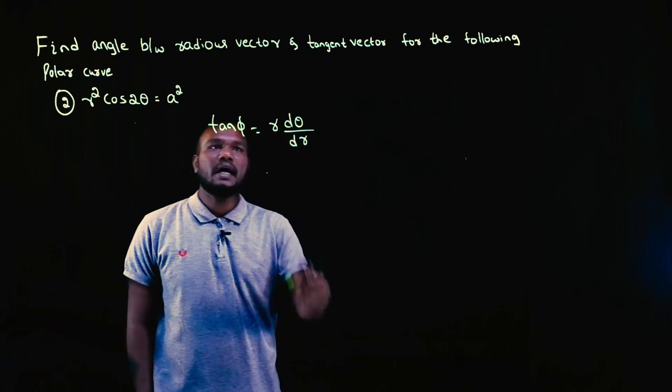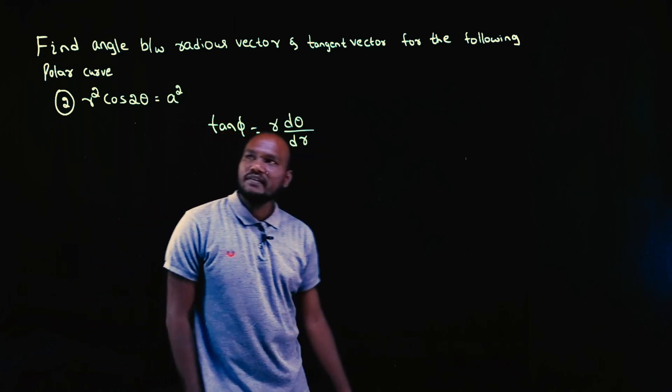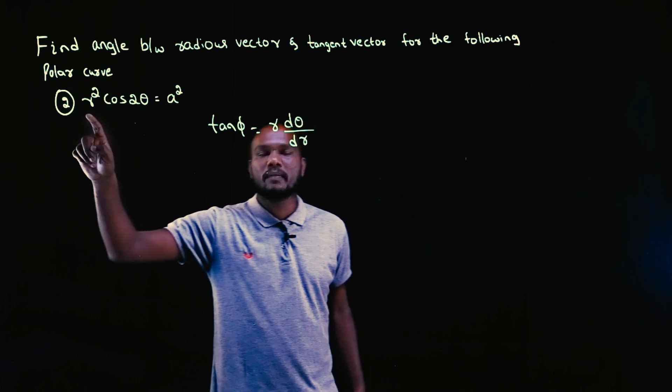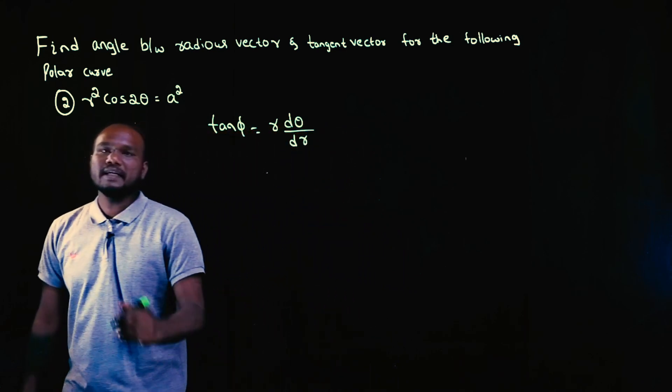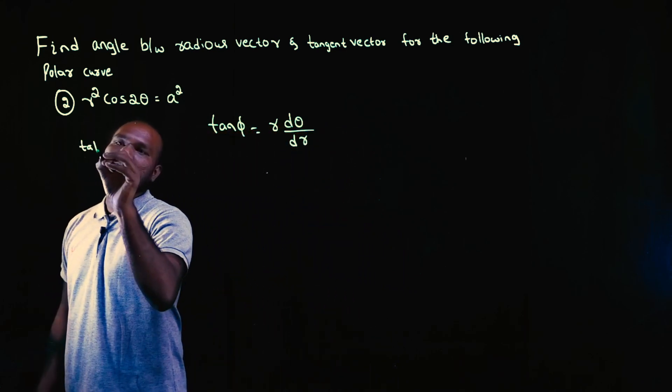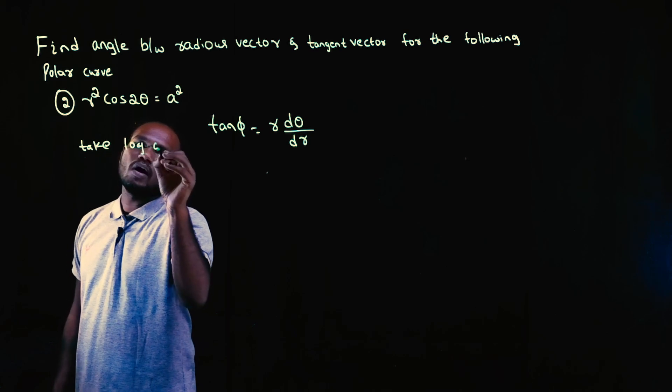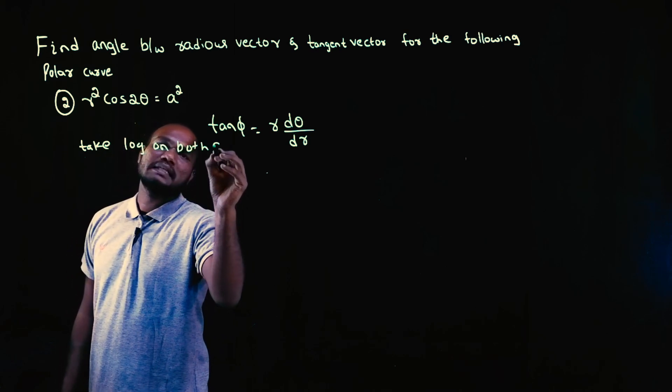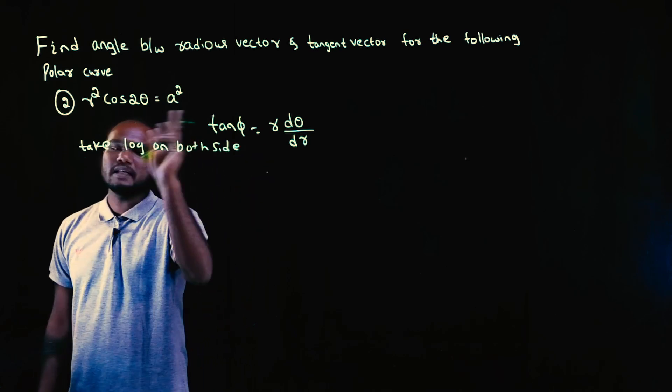To do this, what do you need? dr/dθ. Whenever we have r directly, we can just substitute, but r is a little complicated here. Whenever you have a complicated r, take log on both sides. This is the thing that you need to do.